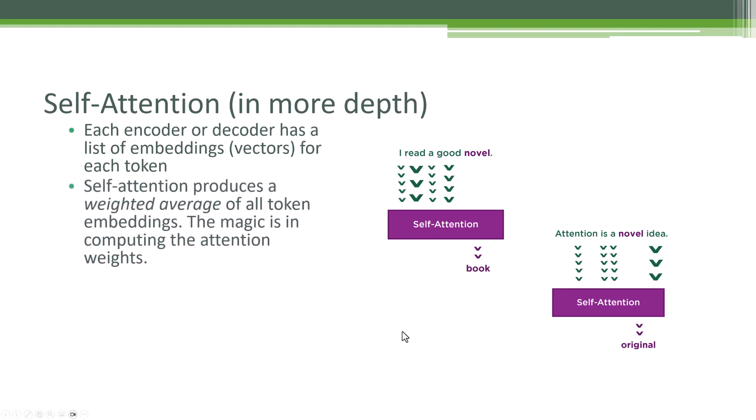So how does this work? Self-attention produces a weighted average of all the token embeddings. The job of self-attention is to compute all of the attention weights between each token. So for the word novel, we have to compute all these weights to I, read, and a, and good. Maybe I has a very weak weight. Maybe read has a very strong weight because read and novel is very important to understanding that we're talking about a book. The word a probably not so important, and good maybe has some medium level of importance to determining the real meaning of this token novel. That's what we're representing here.